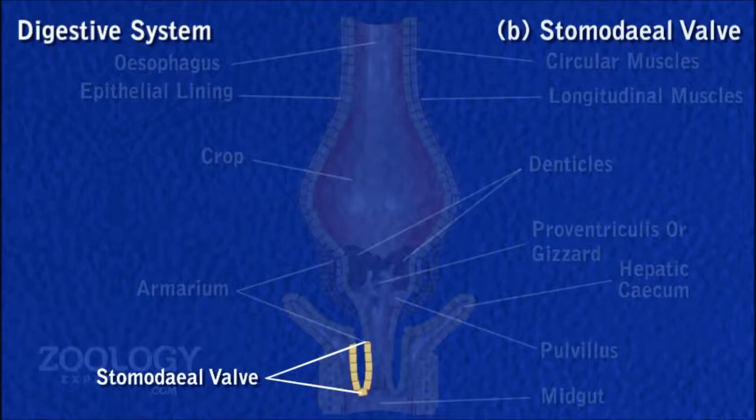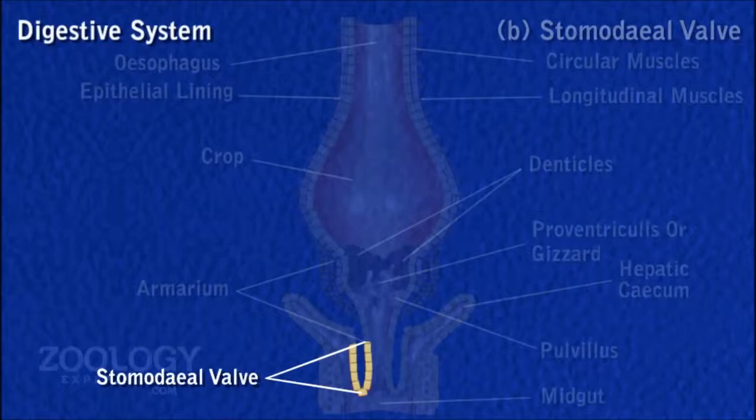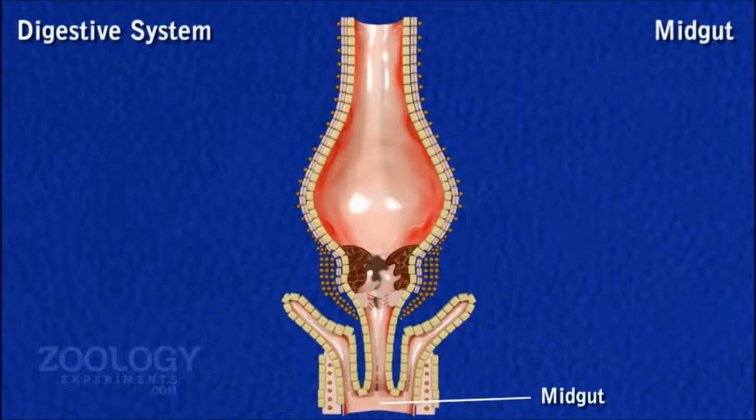Stomodial Valve. Behind the pads, the posterior end of the gizzard extends into the lumen of the mid-gut as a spout-like narrow tube. The stomodial valve folds back on itself and is thus double-walled. The stomodial valve prevents regurgitation of food from the mid-gut into the gizzard.